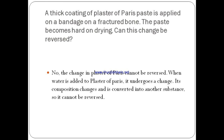If a coating of plaster of Paris paste is applied on a bandage on a fractured bone, the paste becomes hard on drying. Can this change be reversed? No. The change in plaster of Paris cannot be reversed. When water is added to plaster of Paris, it undergoes a change — its composition changes and it is converted into another substance, so it cannot be reversed.